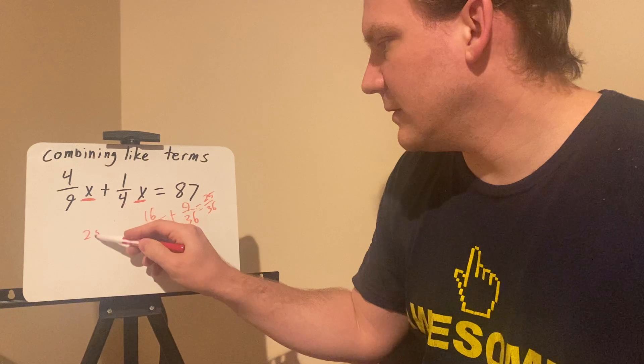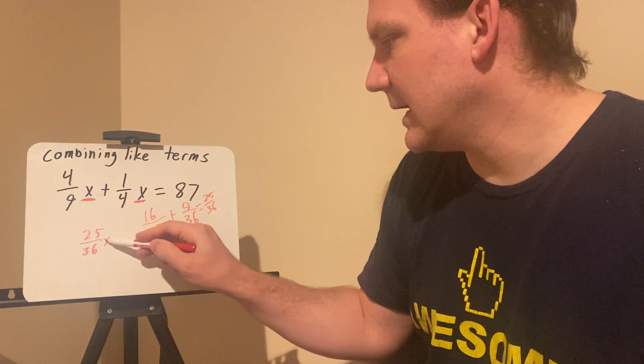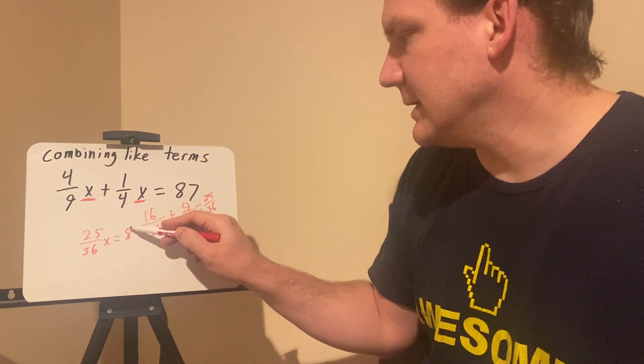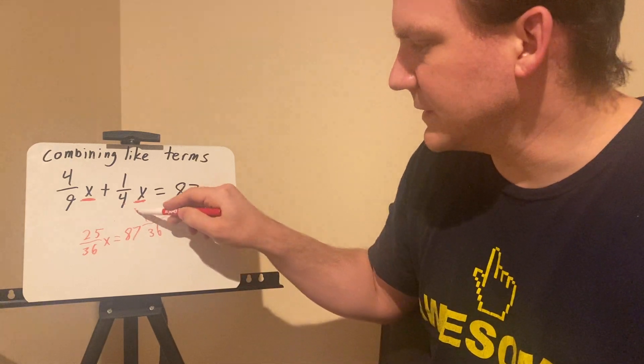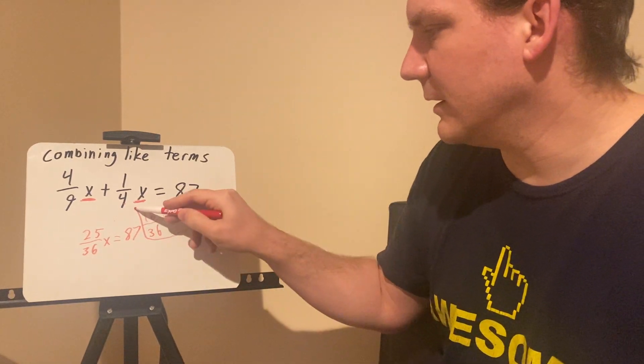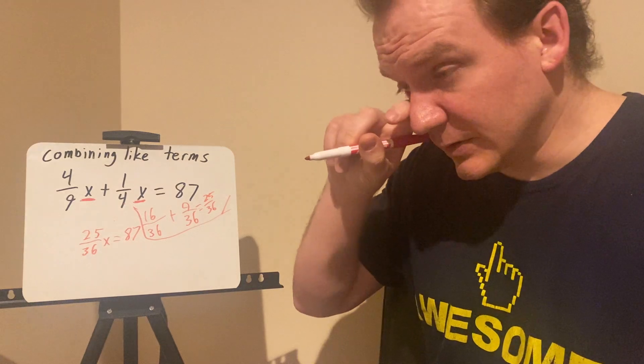So 25/36x equals 87. This is my separate work off to the side here. So that's how I could combine those like terms.